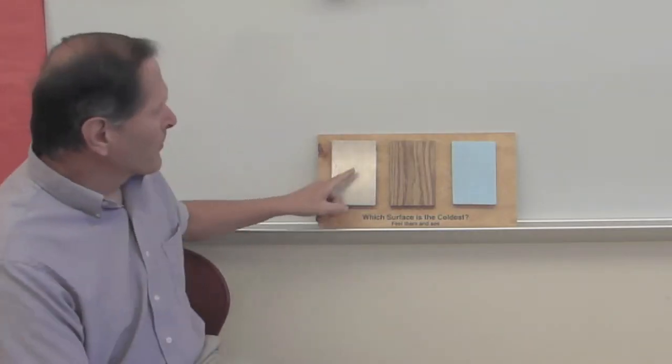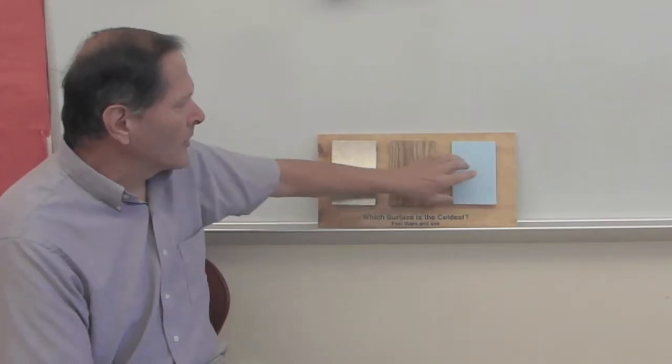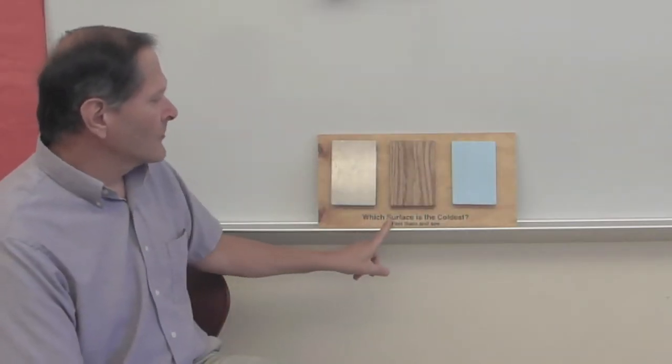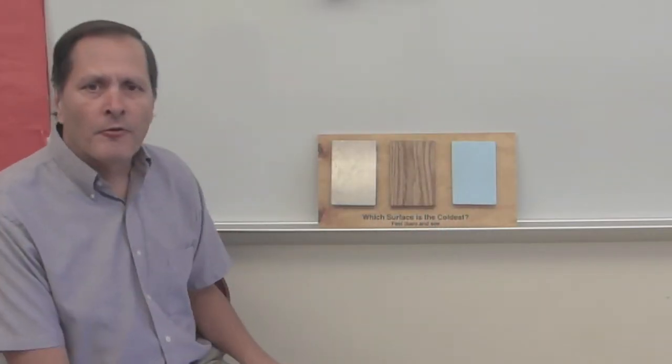It's simply a board that has a metal plate on it, a wooden block on it, a styrofoam block, and it says which surface is the coldest. Feel them and see.